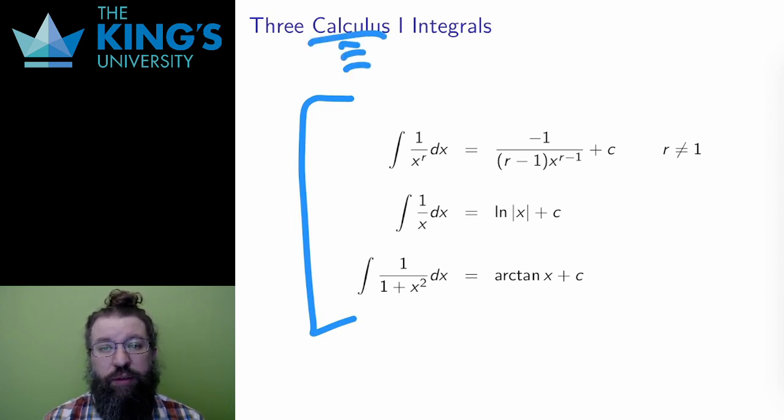The first is the inverse power rule, but expressed for x to the r in the denominator instead of the numerator. If you write this as x to the negative r in the numerator, this is just exactly the power rule in reverse.